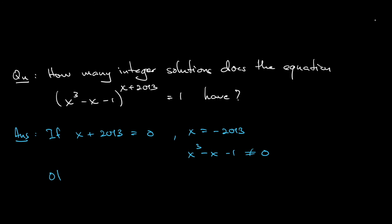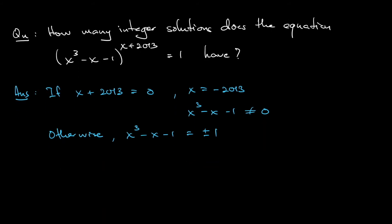Otherwise, if the power is not 0, that means the base is either plus or minus 1, right? So that means the base x cubed minus x minus 1 is either plus or minus 1. Let's deal with the plus 1 first. So x cubed minus x minus 1 equals 1.